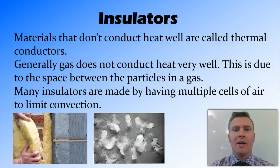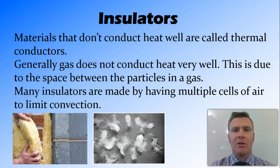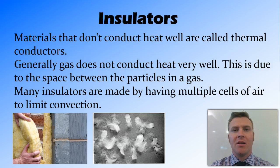How many insulators work is by having multiple cells of air, which stops convection from occurring, meaning the particles aren't free to move around, so only conduction takes place — which doesn't work very well. This is how insulation works in your home. It also explains why down works well in good coats: feathers trap a large amount of air between their filaments, and because that air isn't moving around, convection doesn't occur.